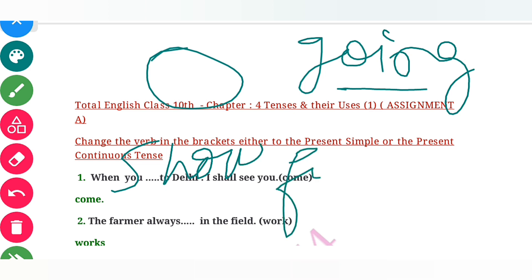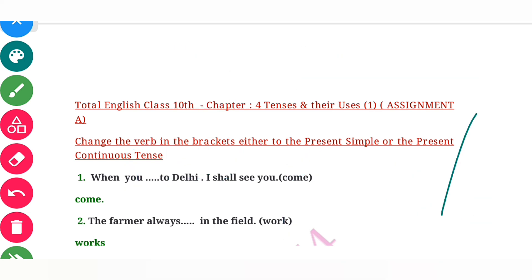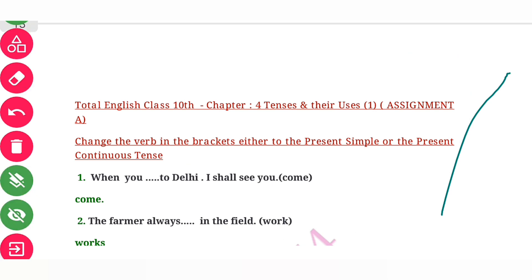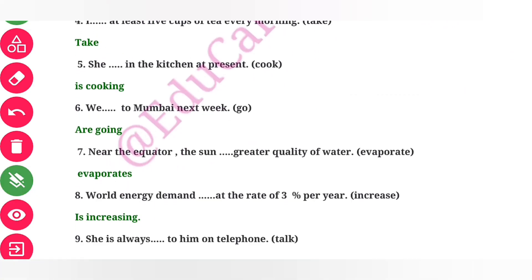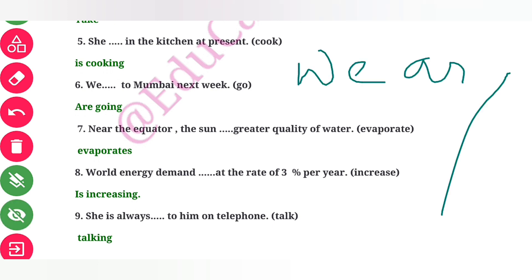The 'going to' form is used to show a future event. So the present continuous with 'going to' is used here. We are going to Mumbai next week.